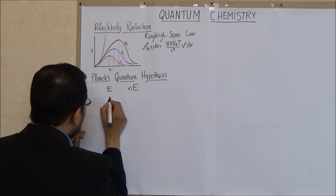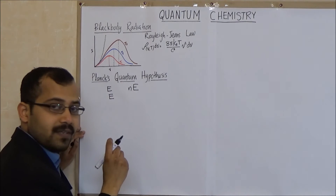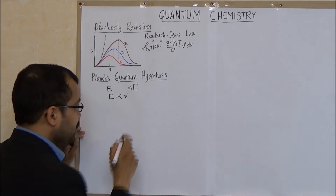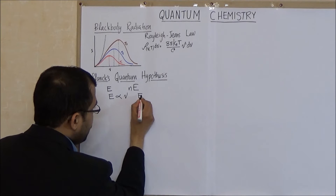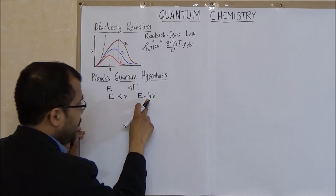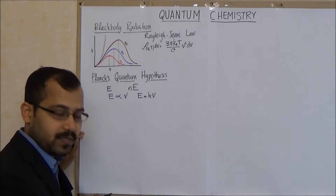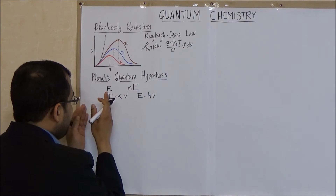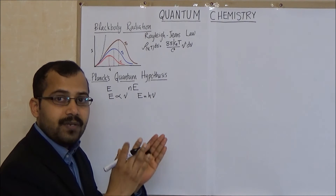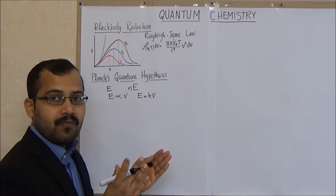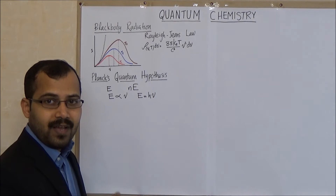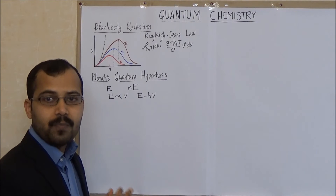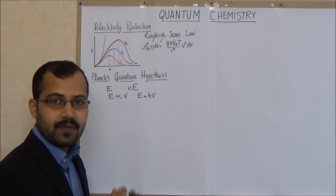Max Planck assumed that this energy E is proportional to the frequency ν. Therefore E is equal to hν, where h is the proportionality constant. So the energy of the electronic oscillator will be like E, 2E, 3E, 4E, etc. And it cannot have energy values like 0.5E or 1.3E or 2.7E, etc.